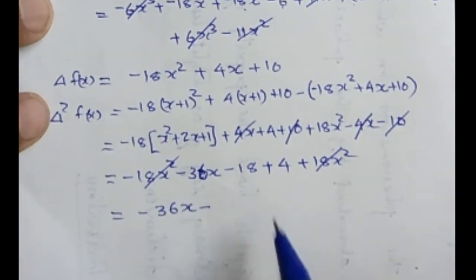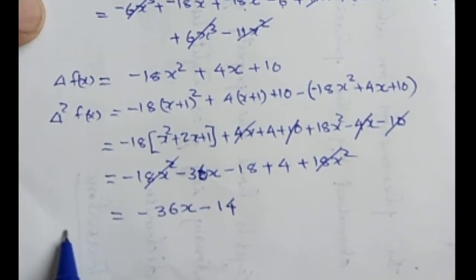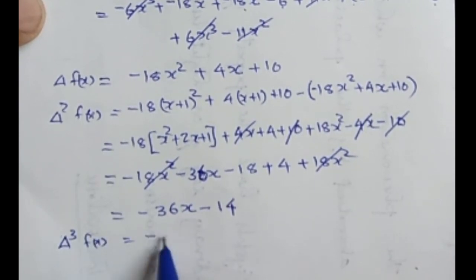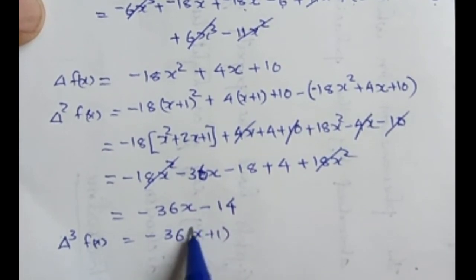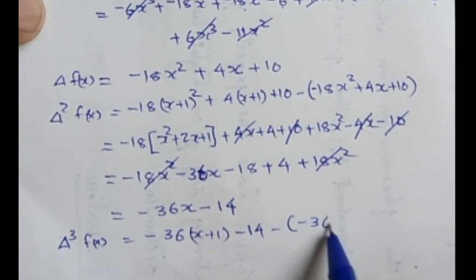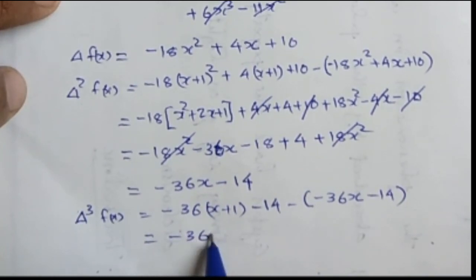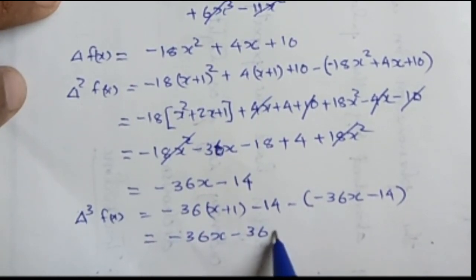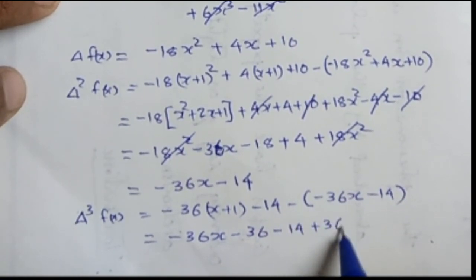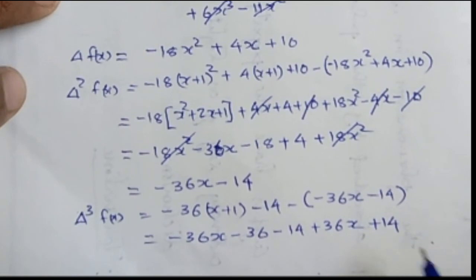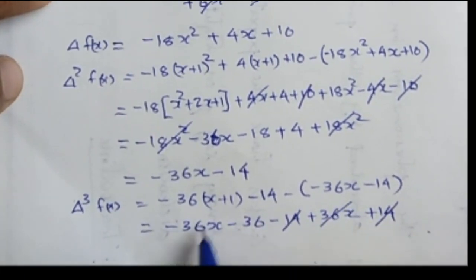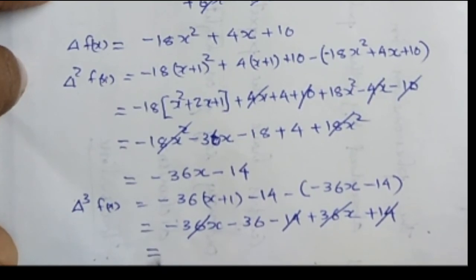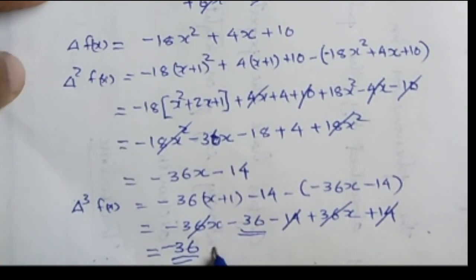Now taking the third forward difference, delta³ f(x) = [-36(x+1) - 14] - [-36x - 14]. This equals -36x - 36 - 14 + 36x + 14. The x terms cancel and the constants cancel, leaving only -36, which confirms the answer derived earlier using the shortcut method.